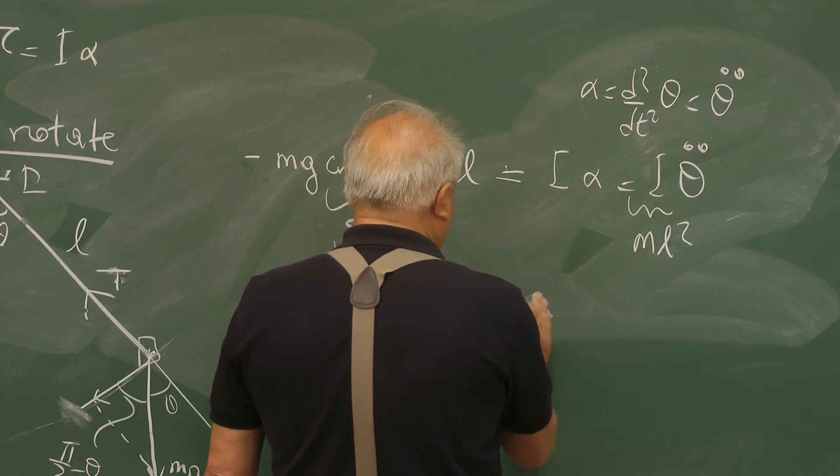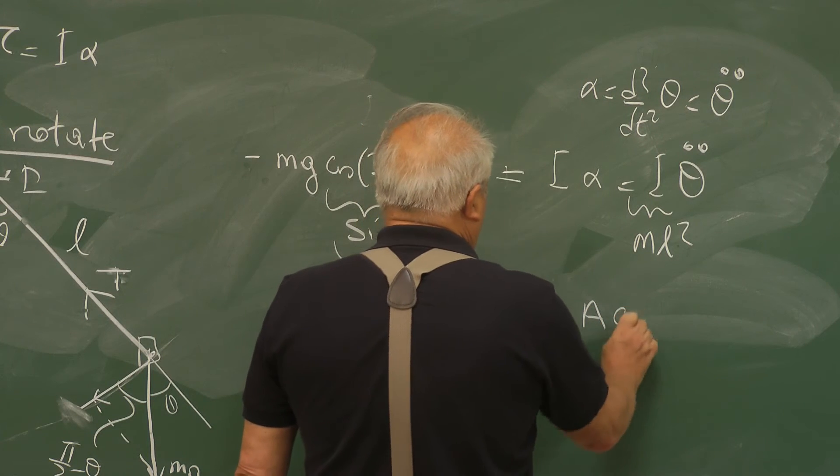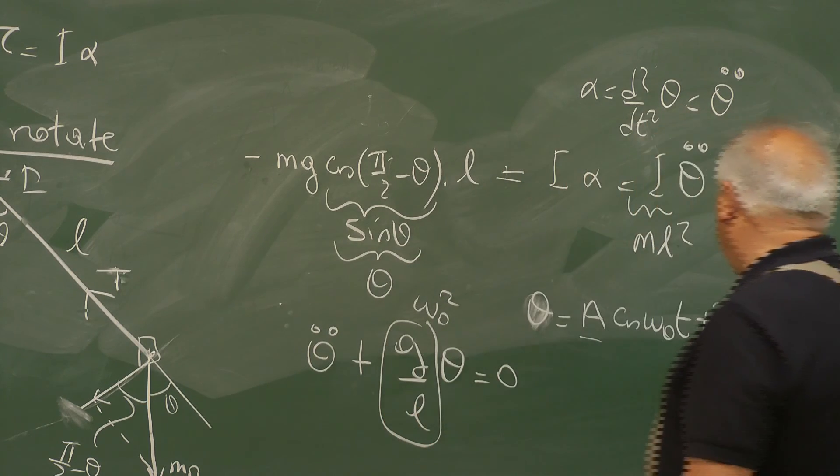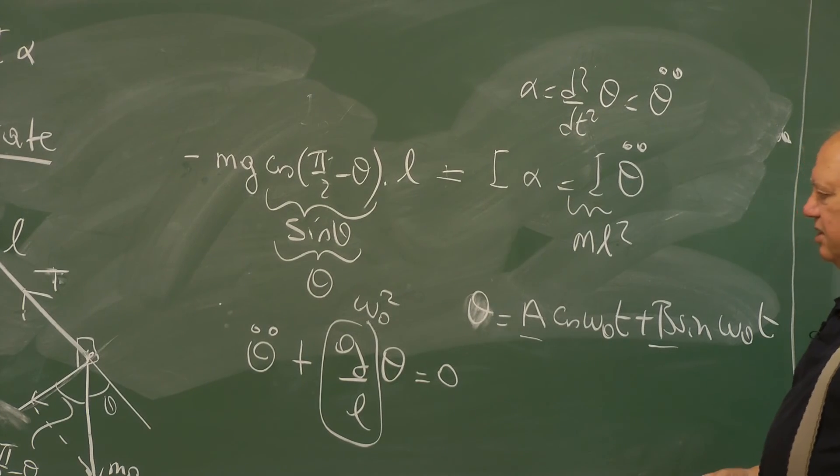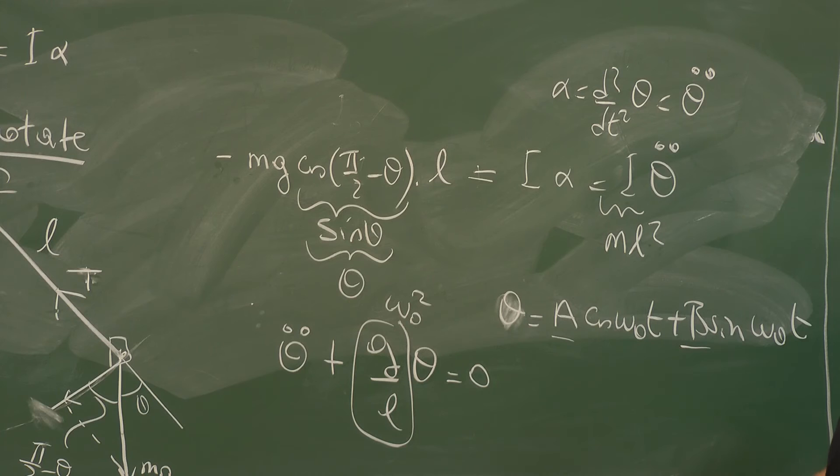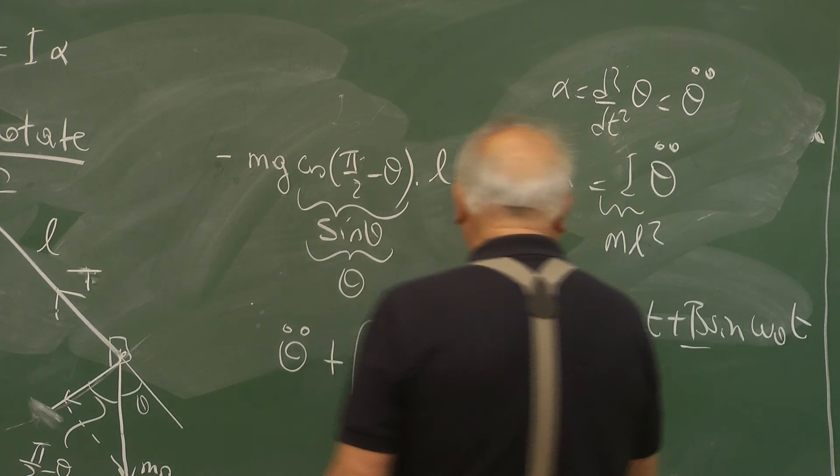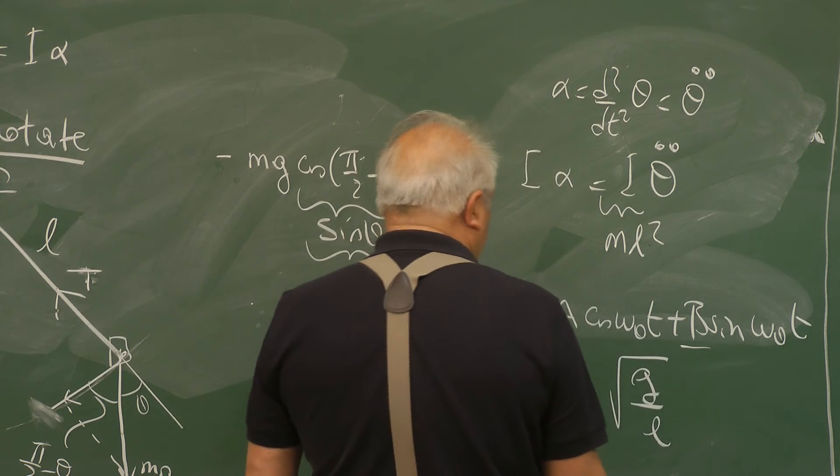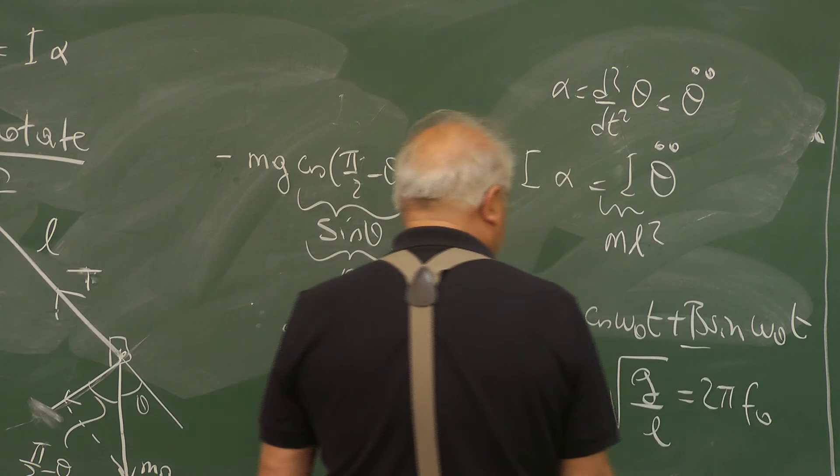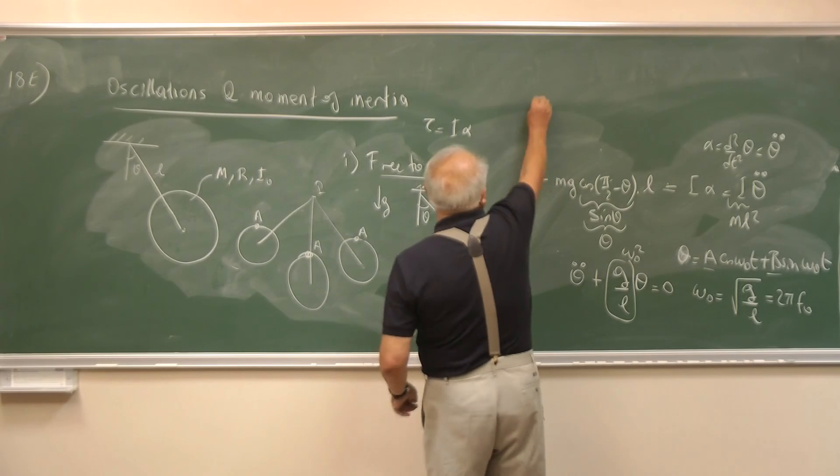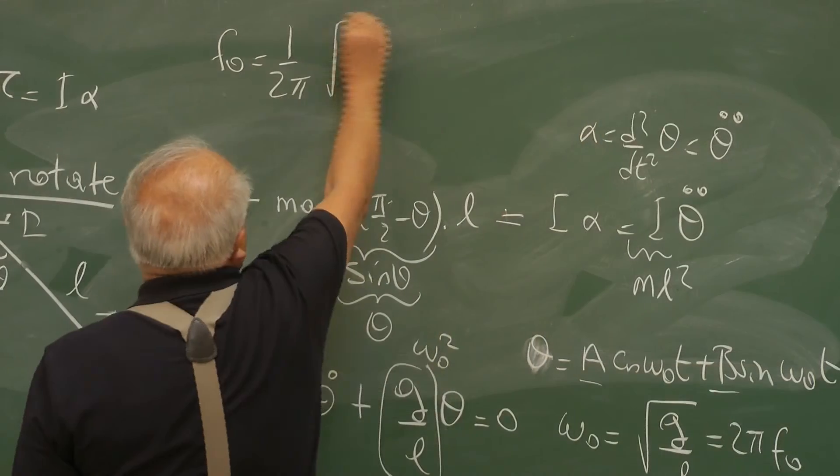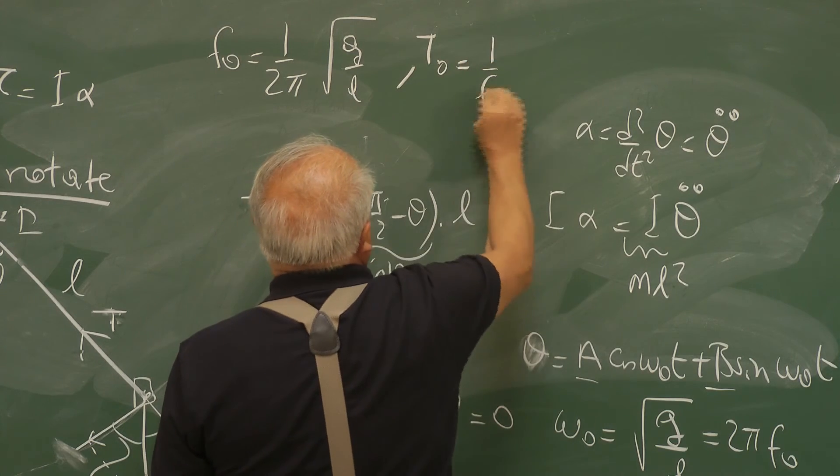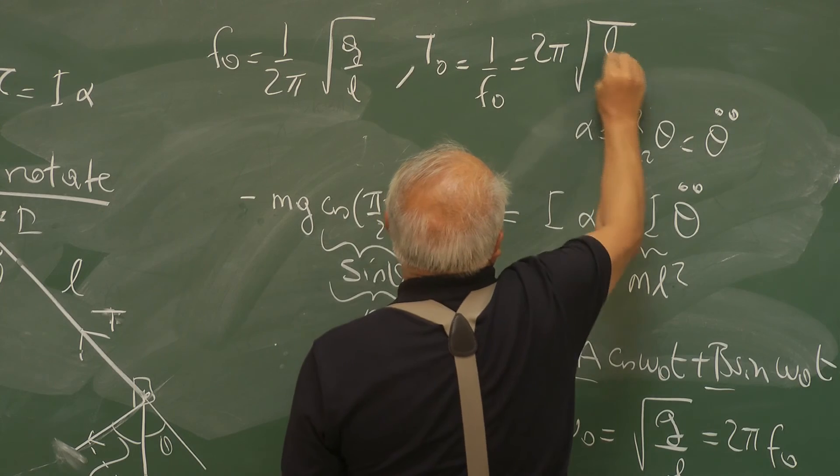And the solutions of this equation is simple: theta is equal to A cosine omega zero t plus B sine omega zero t, where A and B are to be determined from the initial conditions, initial position at time equals zero, and the initial velocity. So omega zero is root G over L, which is just 2 pi F zero. So F zero, the frequency is 1 over 2 pi root G over L, and T zero, the period is 1 over F zero, that's equal to 2 pi root L over G.